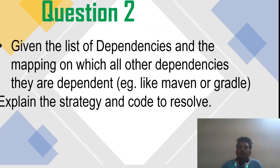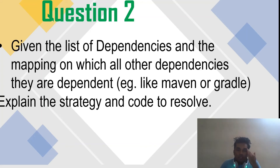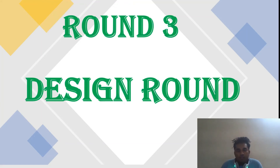The discussion on the scoring problem went well and I completed it. The second question was: given a list of dependencies and mappings showing which dependencies are dependent on others — similar to Maven or Gradle, like jar files dependent on other jar files — you have to come up with a strategy to download all dependencies in the optimal possible way. I gave him the approach of topological sort and coded it. He looked satisfied and that round was over. I heard I cleared that round.